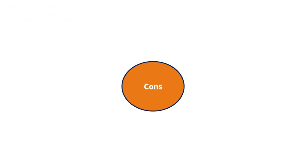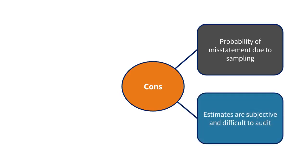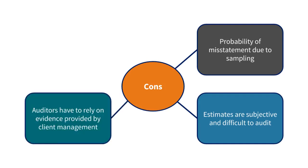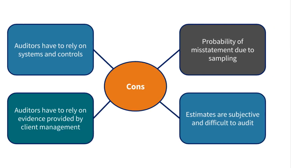The cons: auditors do not test every transaction as they use a sample basis, so there could be misstatements in transactions that have not been seen by the auditor. Financial statements include estimates which are difficult to audit as they are subjective and hard to prove. The auditors may have to rely on evidence provided by client management for some areas if external evidence cannot be obtained. Systems and controls have their own limitations, and the auditors rely on some information provided by these systems.